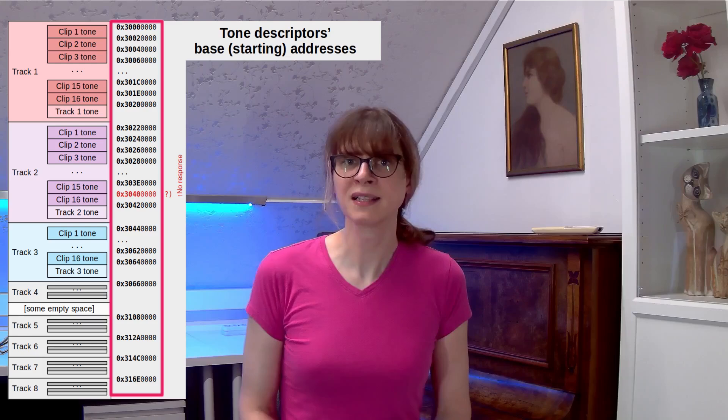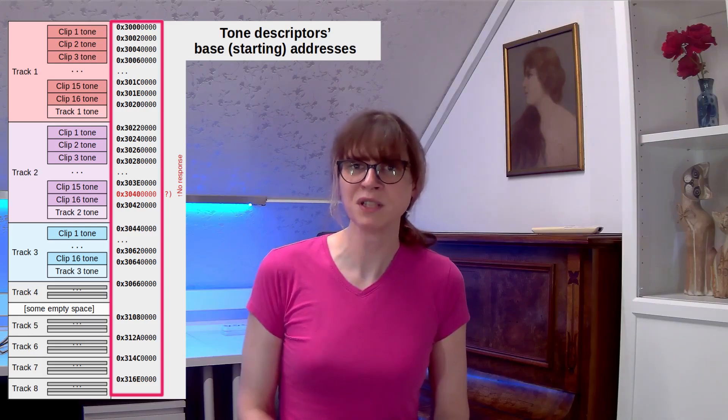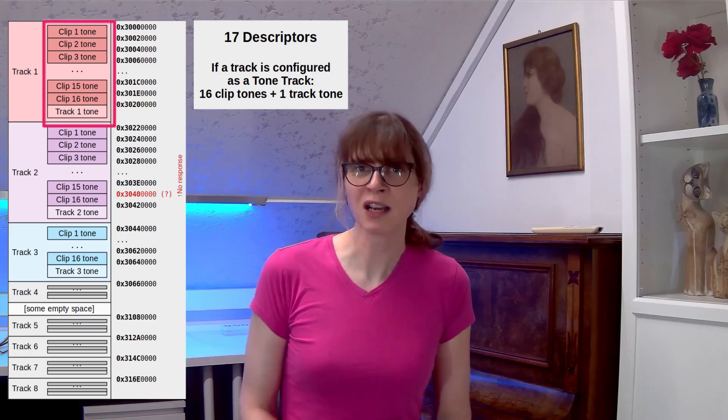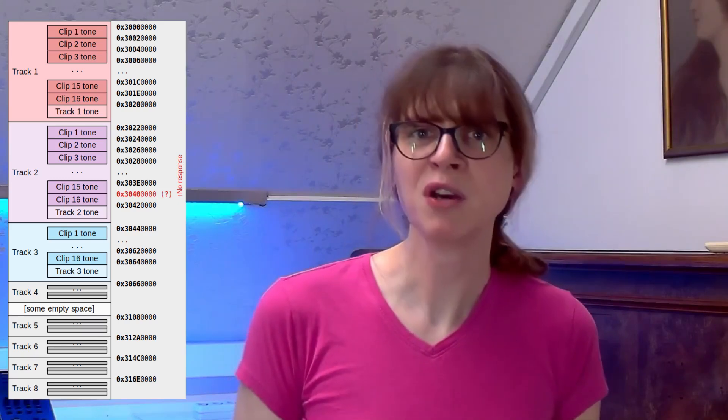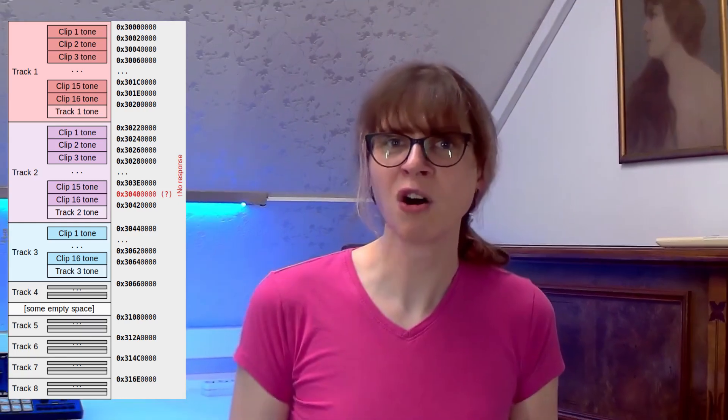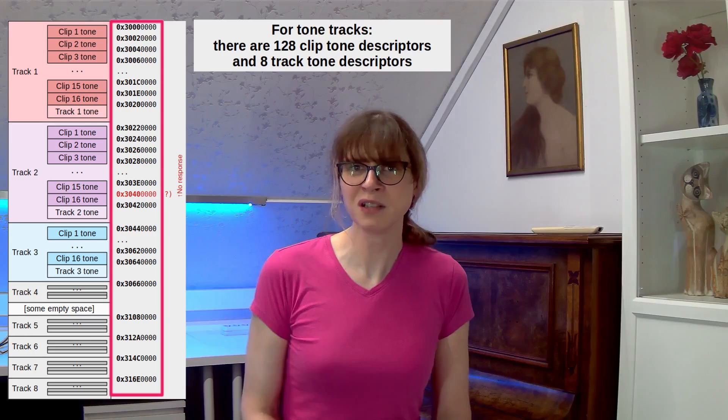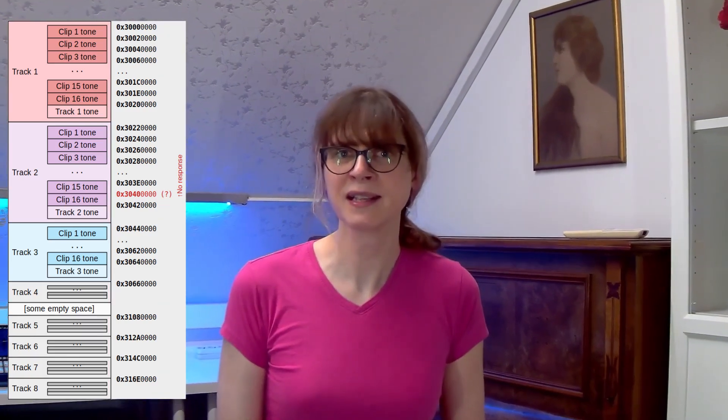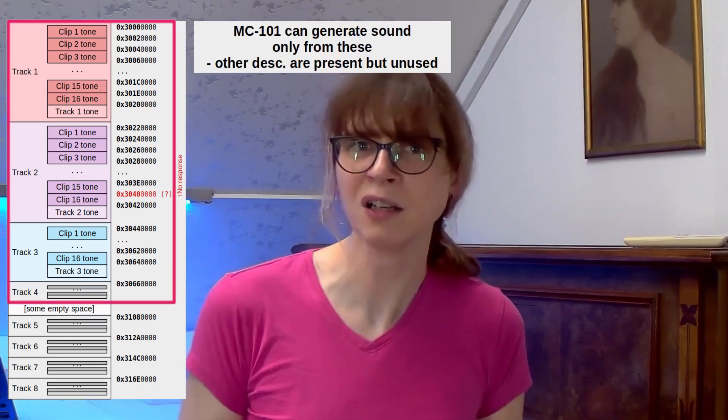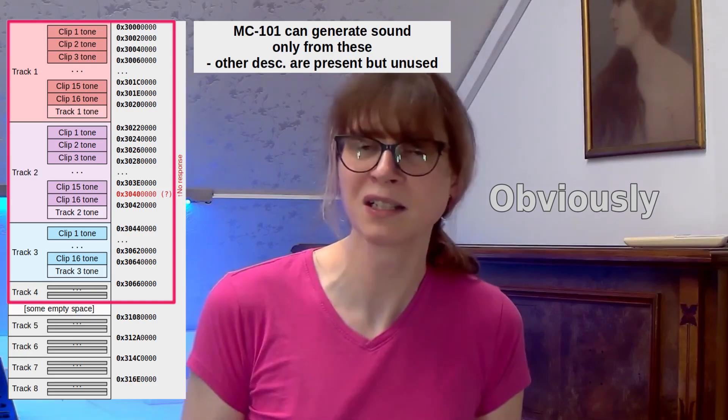In this diagram, you can see the starting addresses of the descriptor blocks in MC-707. As you can see, each track has 17 descriptors. Roland MC-101 and MC-707 really have a lot of Zencore descriptors for tone tracks because each tone clip and each tone track has its own descriptor. This results in 128 descriptors for just the clip sounds plus one separate descriptor for each track tone. An interesting compatibility thing is that MC-101 has the same descriptor set as MC-707 but in 101 you can play sound only from the descriptors for tracks number one to four.